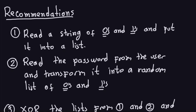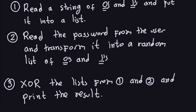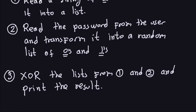The next thing is to read the password from the user and transform it into a random list of zeros and ones. You take the password, which is a string of characters, and transform it into a binary sequence of the same length as the user input. So if the user entered a sequence of ten zeros and ones, the password should generate a sequence of ten zeros and ones so you can XOR them bitwise.